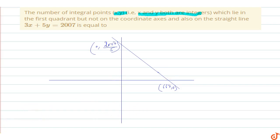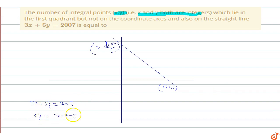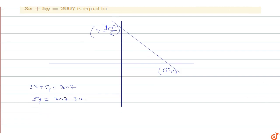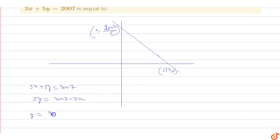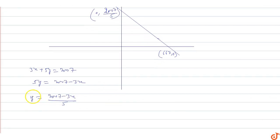From the equation 3x + 5y = 2007, we get y = (2007 - 3x) / 5. For integral points, both x and y must be integers, so we need (2007 - 3x) to be divisible by 5.